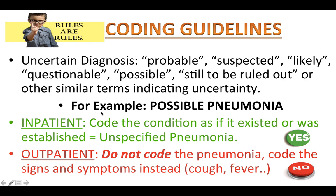Instead, code the signs, symptoms, or abnormal test results or other reasons for the hospital visit. For example, if the final diagnosis is documented as 'possible pneumonia': for inpatient, you code the condition as established — in this case, unspecified pneumonia. For outpatient, do not code the possible pneumonia; code the signs and symptoms instead, such as cough, fever, shortness of breath, etc. Now you understand why knowing the difference between inpatient and outpatient services matters.